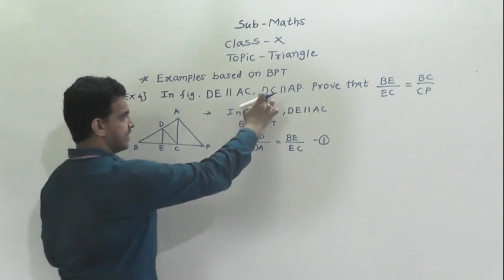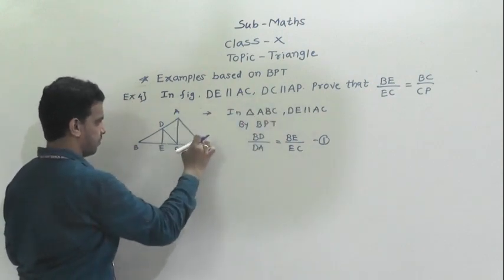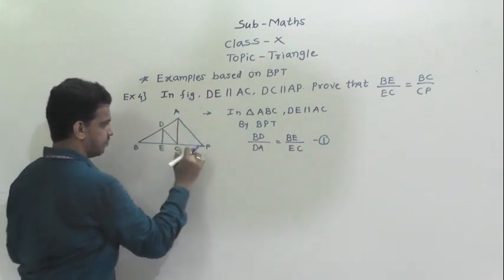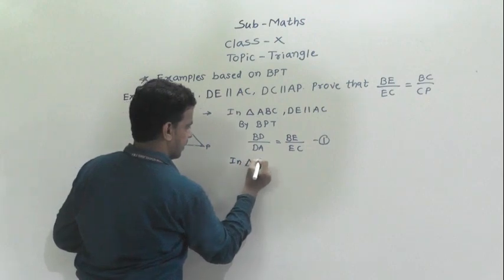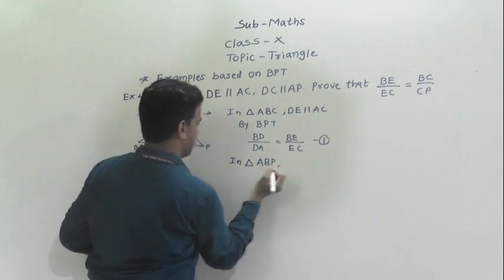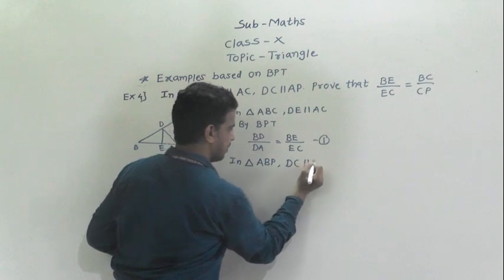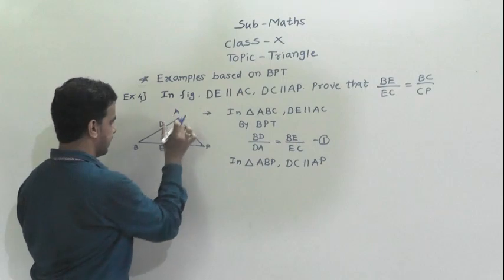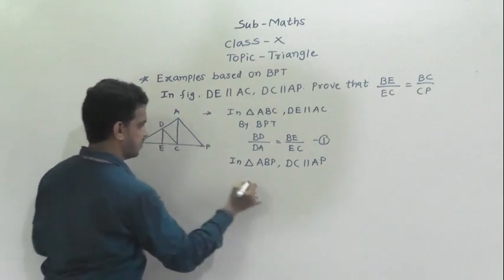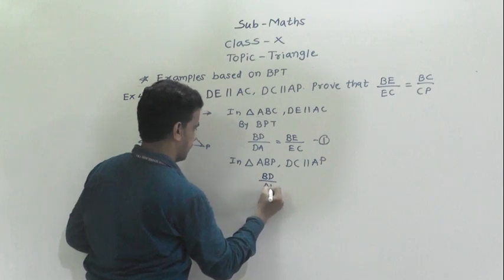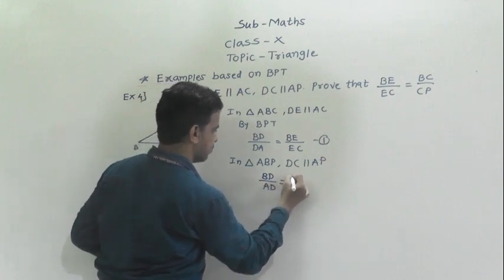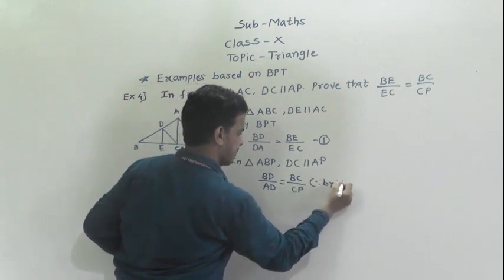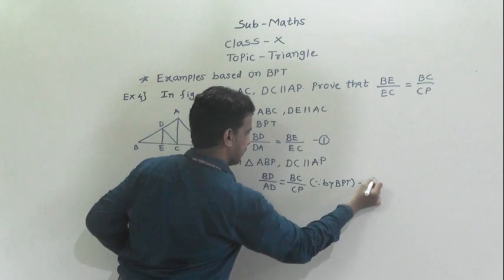Next, DC is parallel to AP is given. We consider triangle ABP. In triangle ABP, DC is parallel to AP. By BPT we can again write BD by AD is equal to BC by CP — call this equation 2.